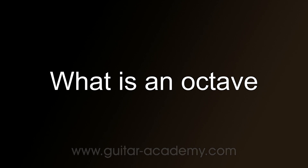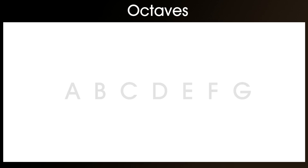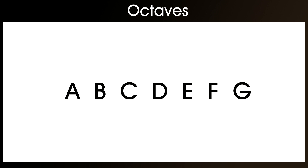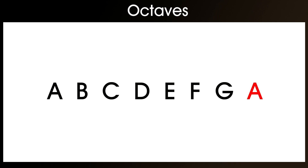What is an octave? In order to understand octaves, we need to revisit the basic principle of note naming. To start with, we'll ignore the sharps and flats. The notes are named from A to G: A, B, C, D, E, F, G. As you can see, this isn't very many notes, so what actually happens is the notes repeat, starting again at A. Where the notes repeat, this is the octave.